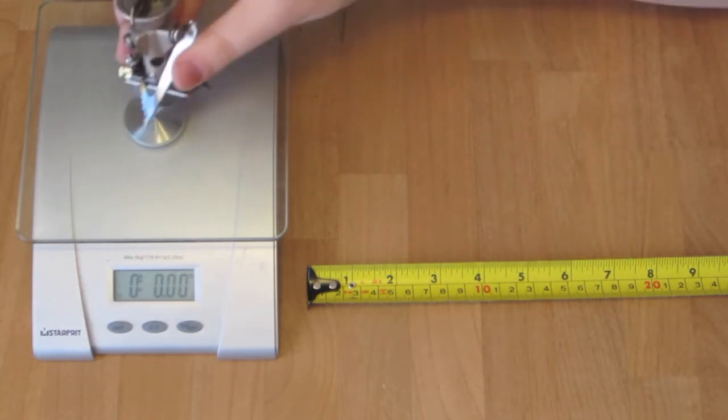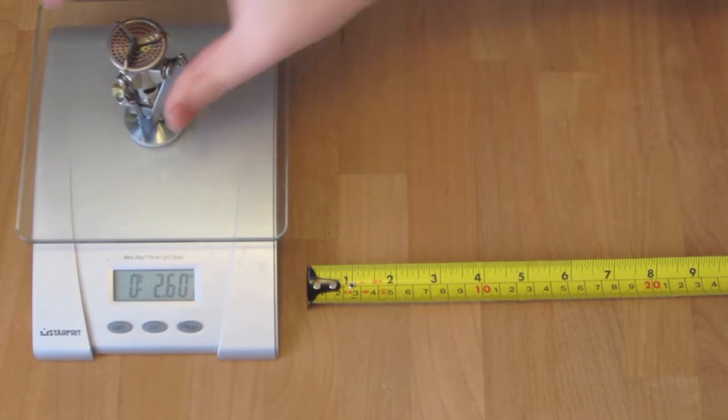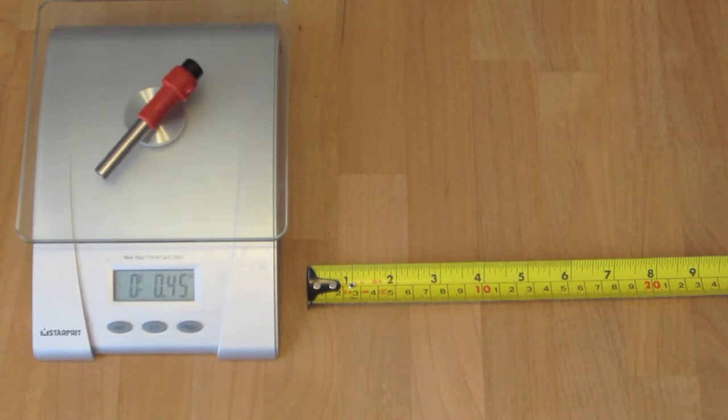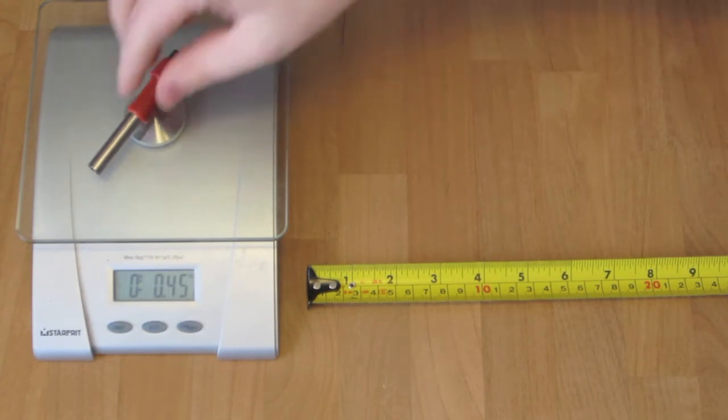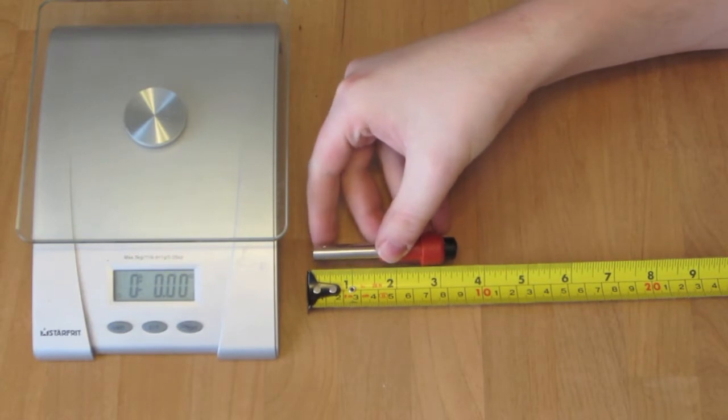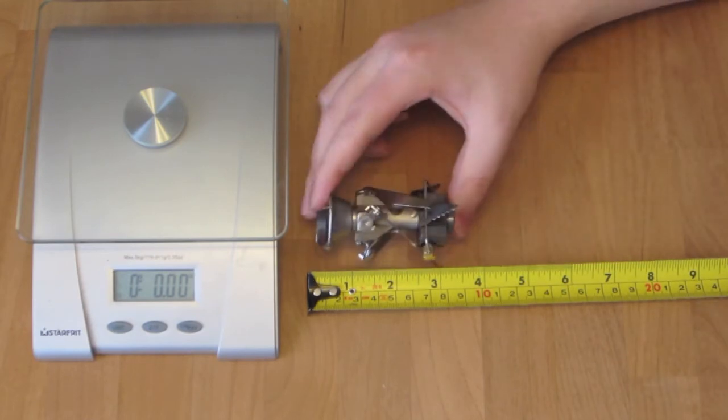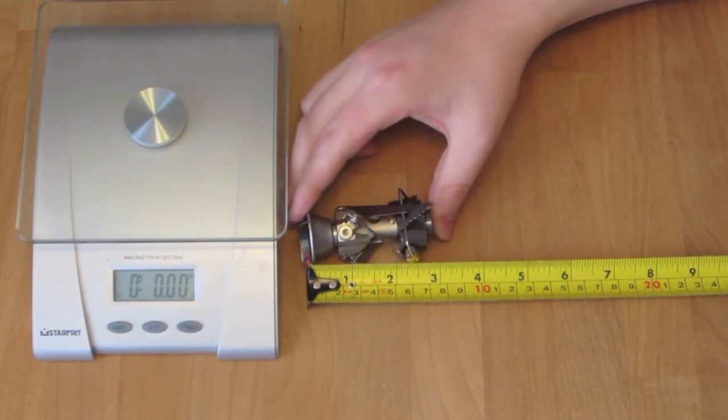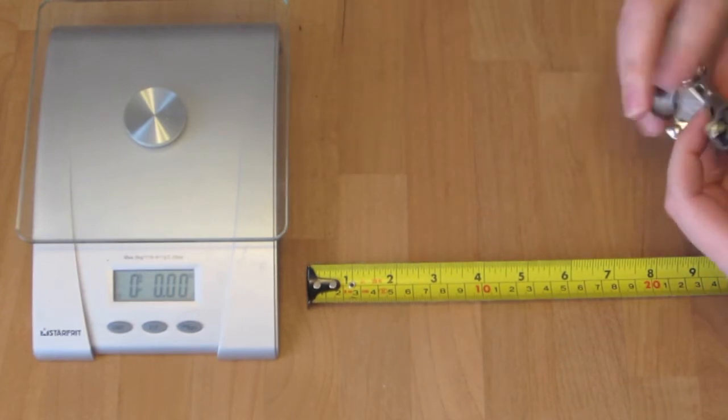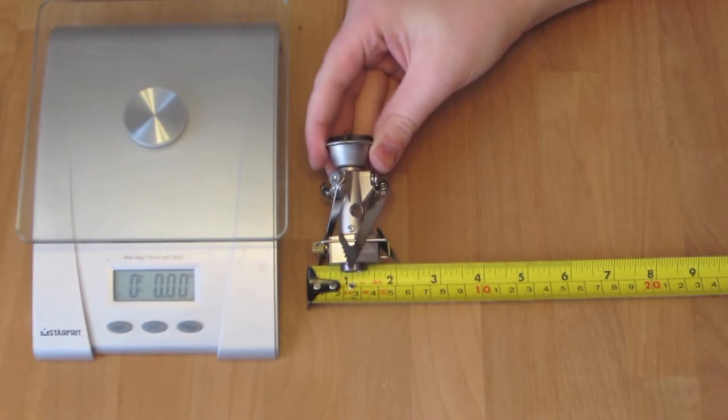The stove by itself is 2.6 ounces. And the piezo lighter is 0.45 ounces. So the lighter is about 3.25 inches long. And the stove with it all packed is about 3 inches. And width wise looking at about 2 inches wide.